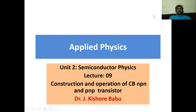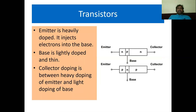Welcome to a session on construction and operation of common base NPN and PNP transistors. A transistor is a semiconductor device. It consists of three regions: emitter, base, and collector. These three regions are separated by two PN junctions.